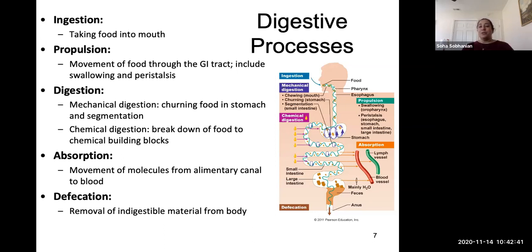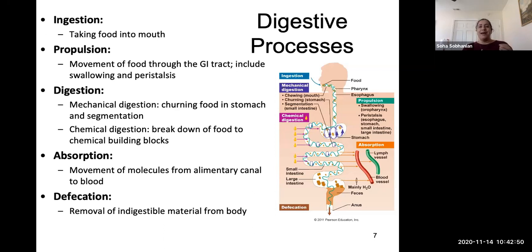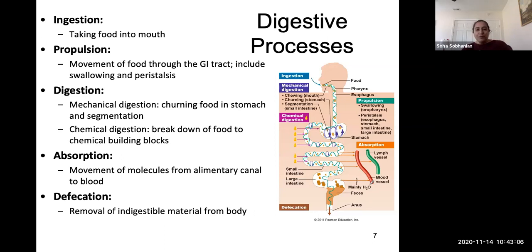Absorption is basically: I've chopped my food down to the smallest pieces — I have fatty acids, simple sugars, and amino acids. Now I take them from the digestive system and bring them into my blood vessels, as shown by the red arrows going into the blood vessels. Any unwanted material is removed from the digestive system through the process of defecation.